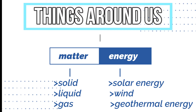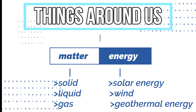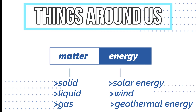Matter has mass and occupies space. Its states include solid, liquid, and gas. Energy, on the other hand, does not have mass and does not occupy space. Examples of energy include solar energy, wind, and geothermal energy.